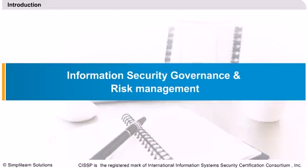Information Security Governance and Risk Management involves the identification of an organization's information assets and the development, documentation and implementation of policies, standards, procedures and guidelines that ensure confidentiality, integrity and availability. Management tools such as data classification, risk assessment and risk analysis are used to identify threats, classify assets and rate their vulnerabilities so that effective security controls can be implemented.